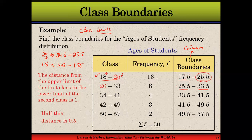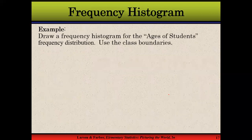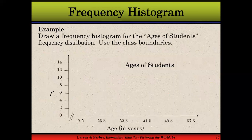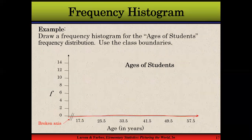Once we have prepared the class boundaries and we have the frequency, we are ready to prepare a frequency histogram. Now we're going to draw the frequency histogram. First we will draw the horizontal axis — on the horizontal axis we have ages, since the classes here are about ages in years.